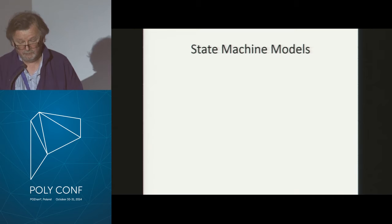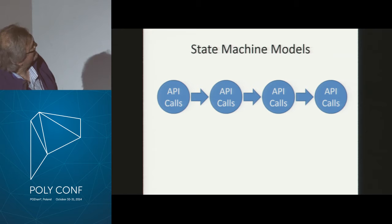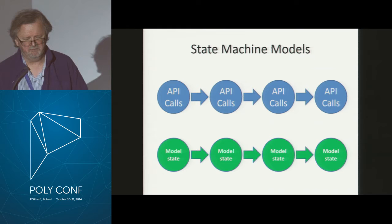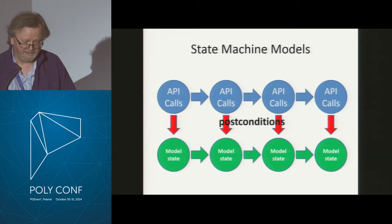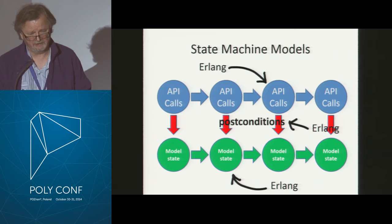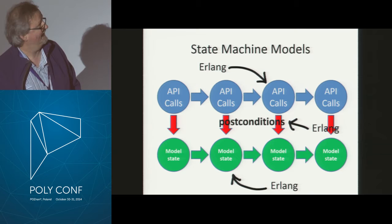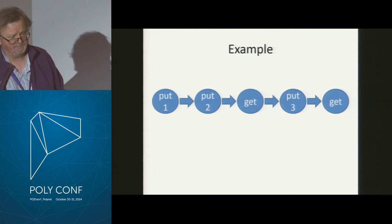The way we test this kind of stuff in QuickCheck is we generate test cases that are a sequence of API calls, and we specify what they should do using what we call a state machine model. A test case looks something like a sequence of calls, and we specify the behavior in terms of a model state. We specify for each operation how that changes the model state, and then we write post-conditions for each operation to check the results. All of this model code is Erlang code — so even though I'm testing C code, the specification of what it's supposed to do is written using Erlang.